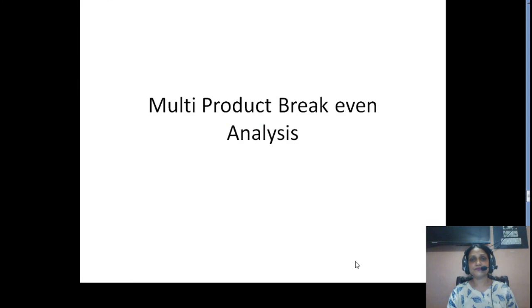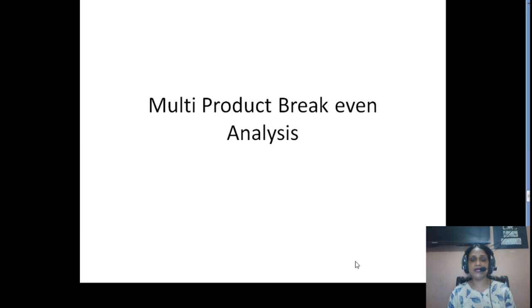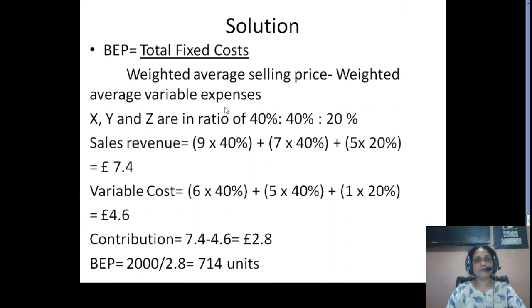We now move to the next topic: multi-product breakeven analysis. This is the last part of the entire topic of CVP or breakeven analysis. There are very rare situations where a company continues with one single product — this is the time of conglomerates, diversified companies, multi-product companies like HUL. So we have to calculate multi-product breakeven analysis. The company has three product lines X, Y, and Z.